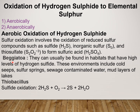The main organisms involved in the aerobic oxidation of Hydrogen Sulphide are Beggiatoa and Thiobacillus. These organisms are mainly found in habitats that have high levels of Hydrogen Sulphide, including coal seeps, sulphur springs, sewage-contaminated water, mud layers of lakes, etc. In terms of the chemical reaction, Hydrogen Sulphide reacts with oxygen and gets converted into elemental Sulphur, which further undergoes oxidation to get converted into thiosulphate and H2SO4.